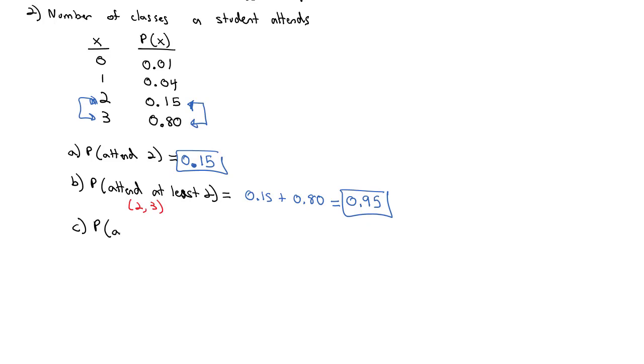Notice how that's different than if I ask what is the probability that they attend more than two. If I ask for the probability that someone attended more than two classes, now I'm not talking about two because two is not more than two. I'm just talking about the number three. So the three classes attended would just be this 0.80 probability that a random student attended more than two classes.